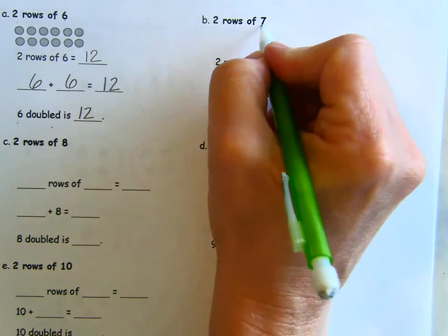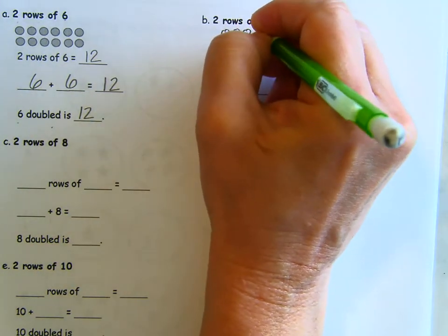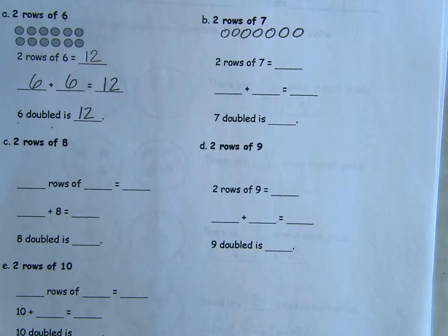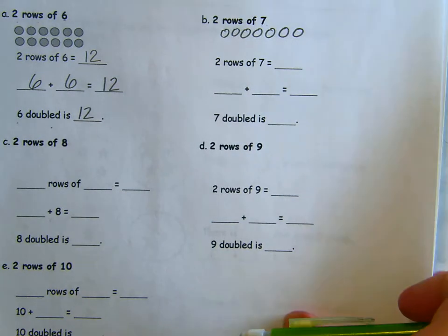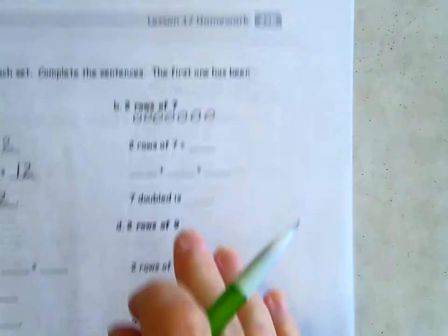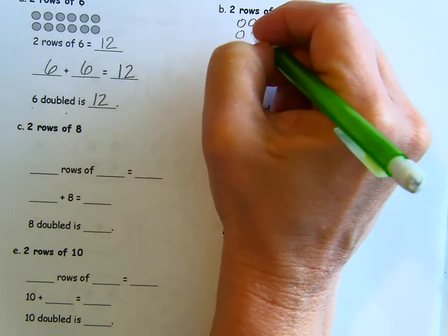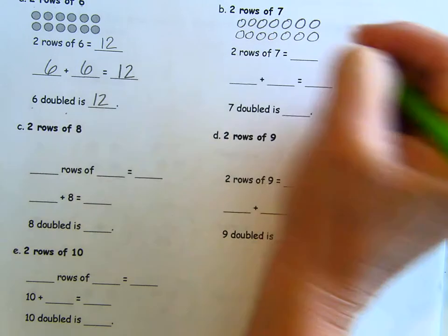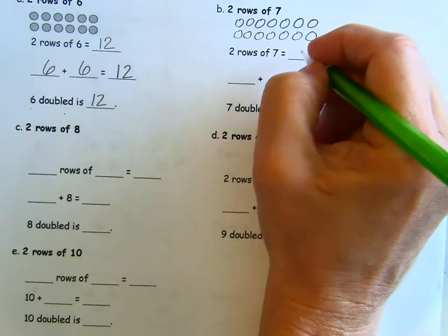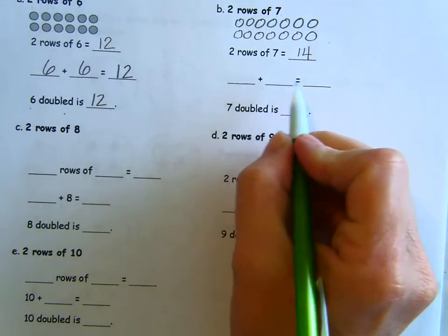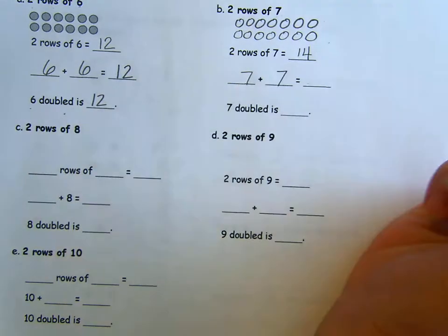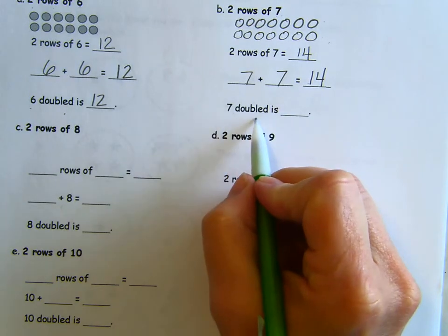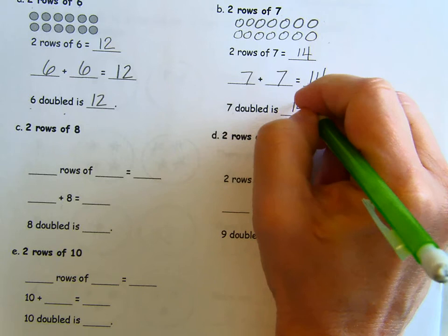So now we're going to draw the arrays. Seven of them. One, two, three, four, five, six, seven. You have to draw pretty small. And if you're having a hard time fitting it in this space, you could always do it on another piece of paper or on your whiteboard and then just use your array to answer the questions. One, two, three, four, five, six, seven. So I have seven in each row. Two rows of seven equals 14. And the doubles fact is seven plus seven equals 14. Seven doubled is 14.